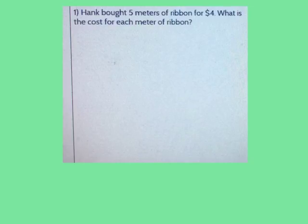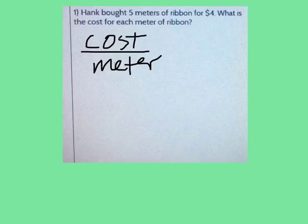Here's your first problem where you're working all on your own. Go ahead and read the problem. The first thing that you need to figure out is what is it that you're finding here? What is the cost for each meter of ribbon? It means what is it that I'm going to divide to find the unit rate? I'm going to divide the cost by the meters because I'm looking for the cost for each meter of ribbon. Go ahead and do that now.